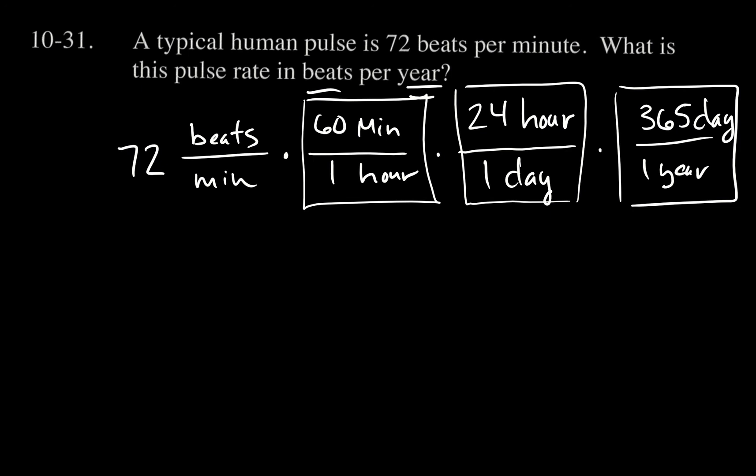For example, I've got minutes in the denominator and minutes here—those are gone. Minute over minute is equal to one. I do have to leave the 60 behind, but the units are gone. I could take hour—an hour over an hour is one, it's gone. And then the final one here is day—day over day, they're gone.